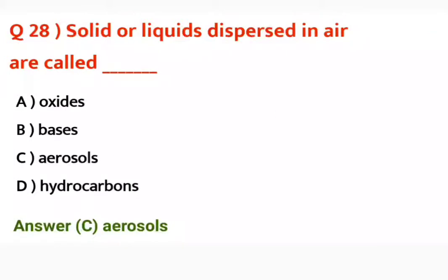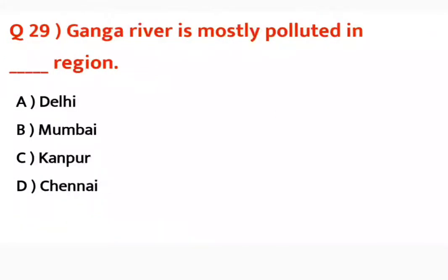Question number twenty-nine: Ganga river is mostly polluted in which region? Ganga river Hindustan ka sabse bada darya hai. Yeh zyada tar ganda kahan ho raha hai? The answer is Kanpur, because Kanpur is the most populated part of Uttar Pradesh.